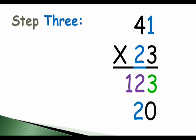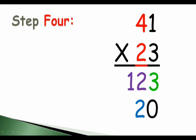In step four, the numbers that we multiply are red. We are multiplying 2 times 4. 2 times 4 is 8. We will write the 8 next to the blue 2.